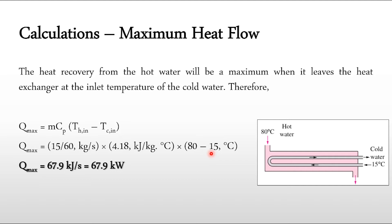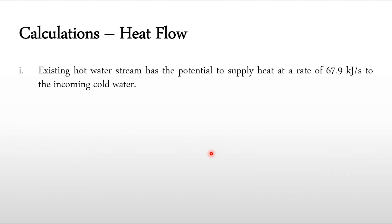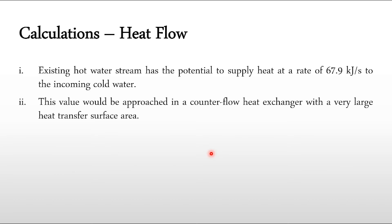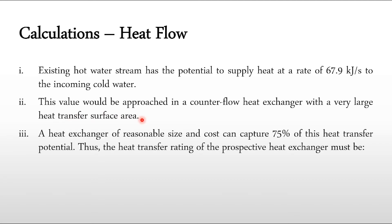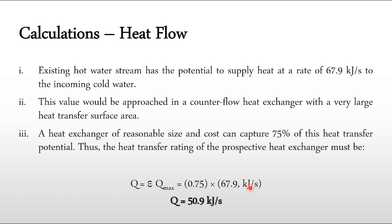The existing hot stream has the potential to supply heat at a rate of 67.9 kW to the incoming cold water, but a very large heat transfer surface area would be required to achieve this. Therefore, we extract 75% of it: Q = effectiveness × Q_max = 0.75 × 67.9 = 50.9 kJ/s. This is a reasonable target — we need to extract 50.9 kW from the drain water to supply to the incoming cold water.